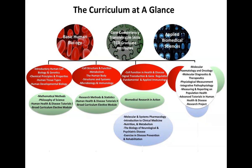Just to give you an idea of what the curriculum involves — and there's a lot of information on this slide, all of which is available at our stand in the Biomedical Sciences Institute — the main subjects that are studied can be grouped into three main areas or themes. These are basic human biology, core competencies and transferable skills required of trained scientists, and thirdly applied biomedical sciences.